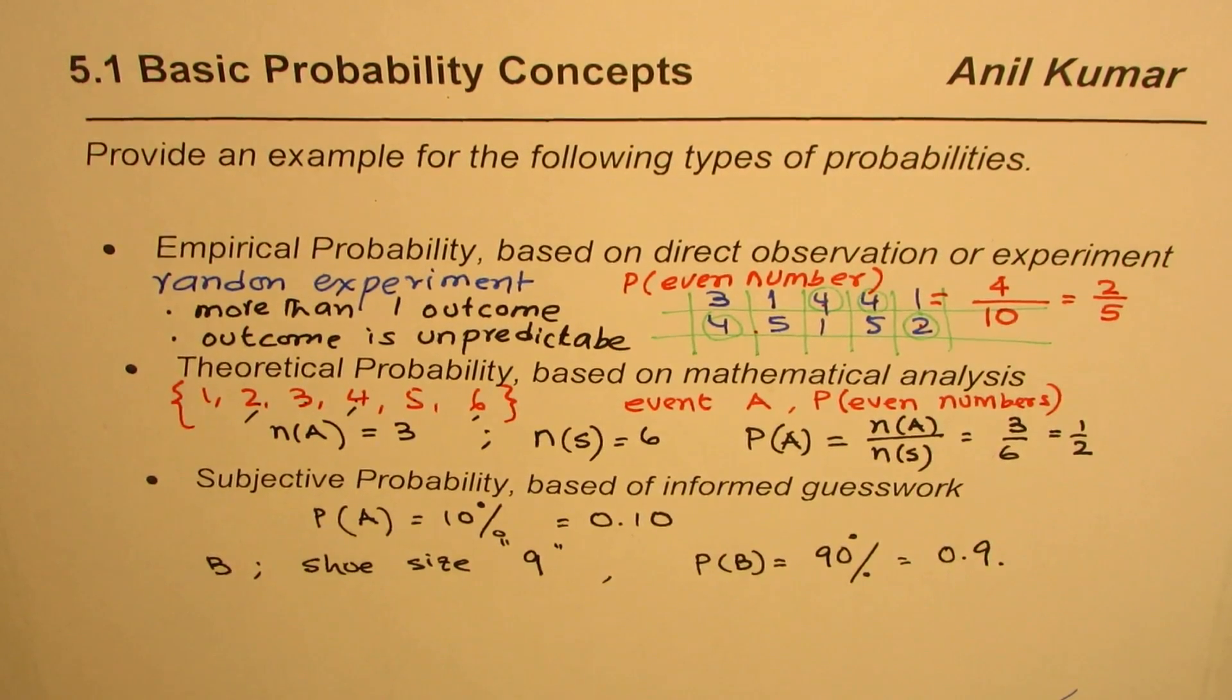So I hope with this you get an idea about three types of probabilities. Empirical probability is based on experiments. Theoretical is based on mathematical reasoning and subjective is based on informed guesswork. I hope that helps. Thank you and all the best.